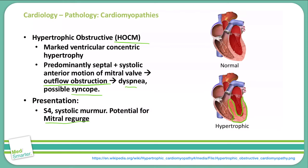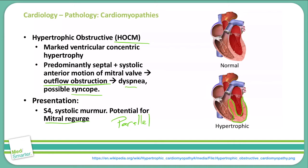In contrast to dilated cardiomyopathy, the sarcomeres in hypertrophic obstructive cardiomyopathy are added in parallel. Parallel meaning that they're moving together — you have multiple sarcomeres on top of each other, and that's how we get that hypertrophy — versus series, when we're adding them alongside of each other.